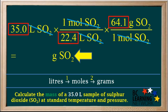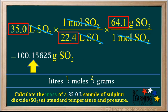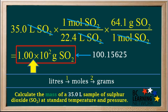So we take 35.0 divided by 22.4 times 64.1, and the calculator answer is 100.15625. But we need to round that to three significant figures. The best way to express this number to three significant figures is 1.00 times 10 squared grams of SO2. So this is our final answer.